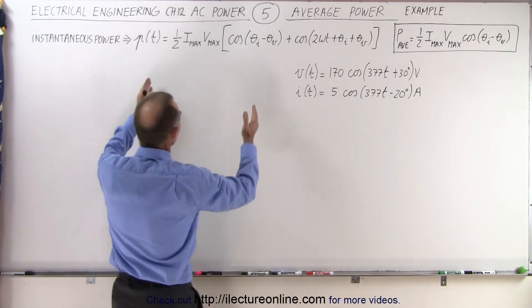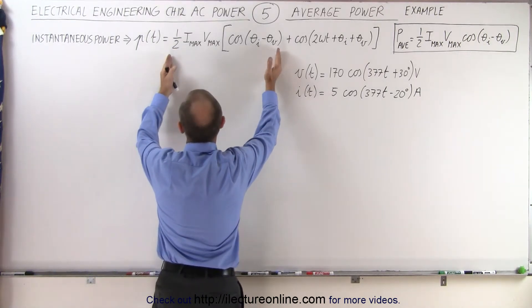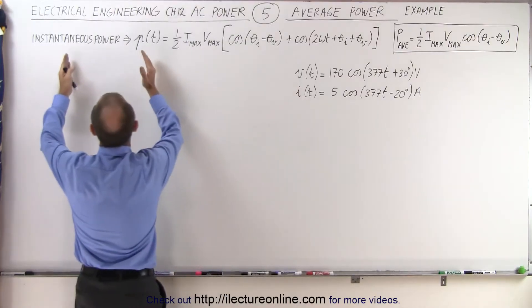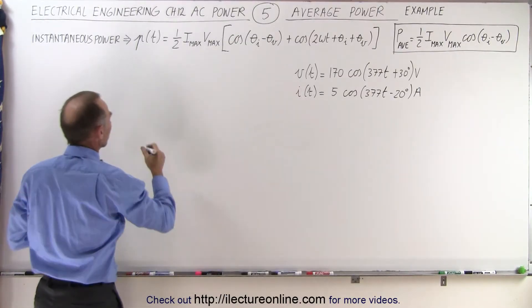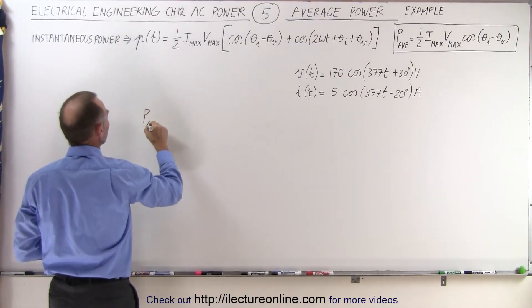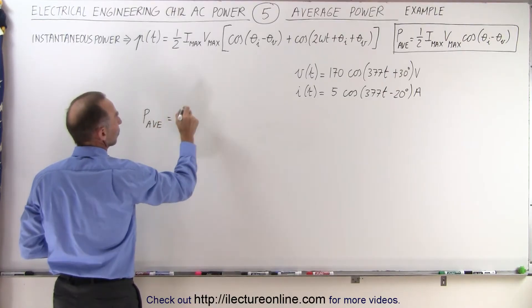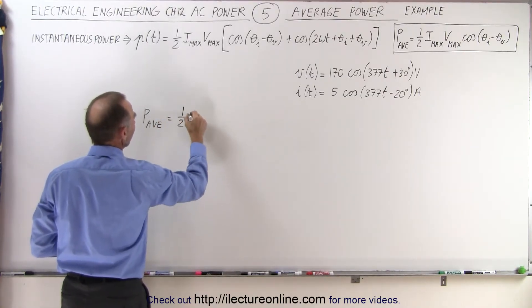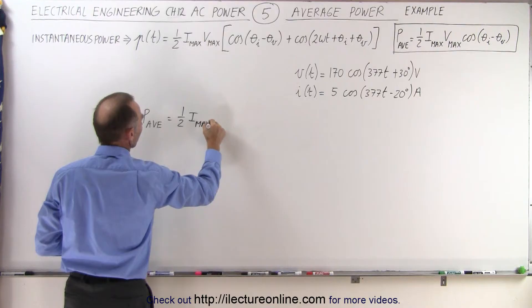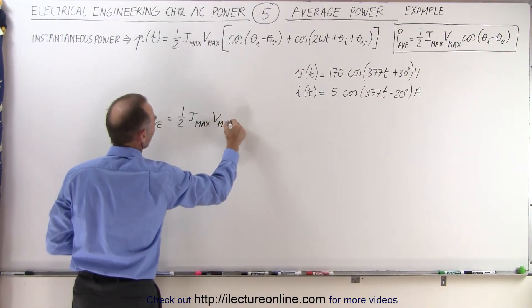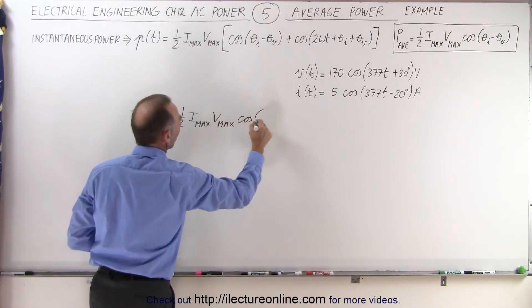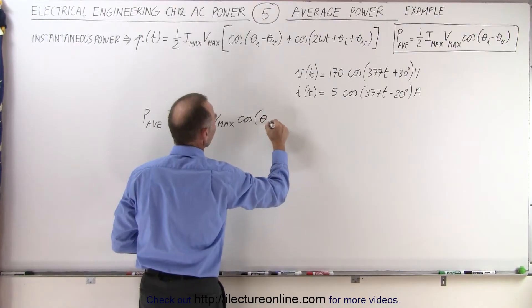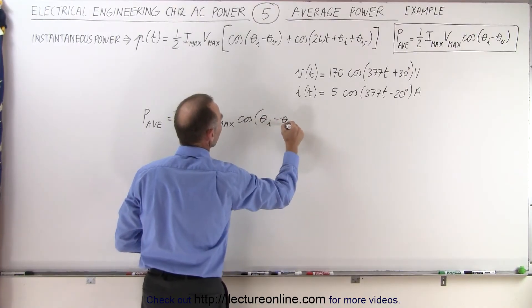And notice that the average power is basically the first portion, the constant portion, of the instantaneous power equation. So the average power is equal to one half times Imax times Vmax times the cosine of the difference between the two phase angles, theta sub i minus theta sub v.